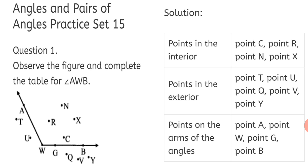For points in the exterior — outside the arms of the angles — we can see Point T, Point U, Point Q, Point V, Point Y. Hence they are called points in the exterior. Finally, the points on the arms of the angles: the arms are WA and WB. Points on them are Point A, Point W, Point G, and Point B.